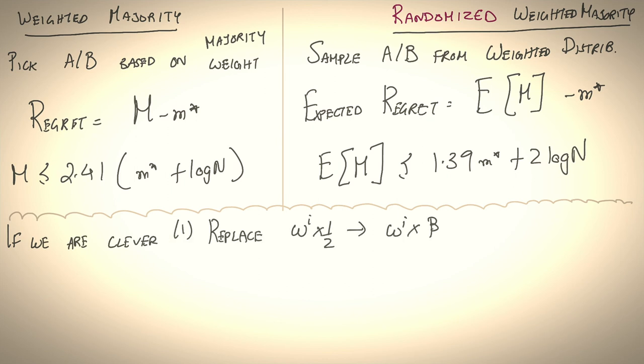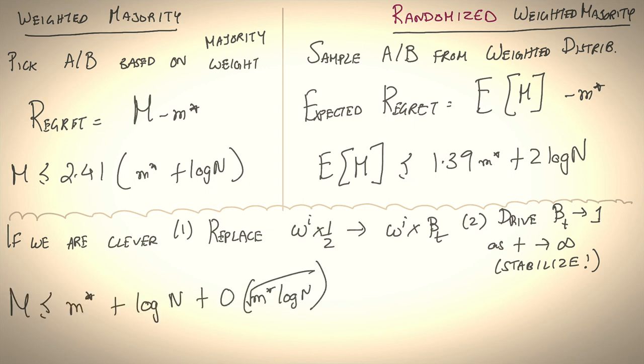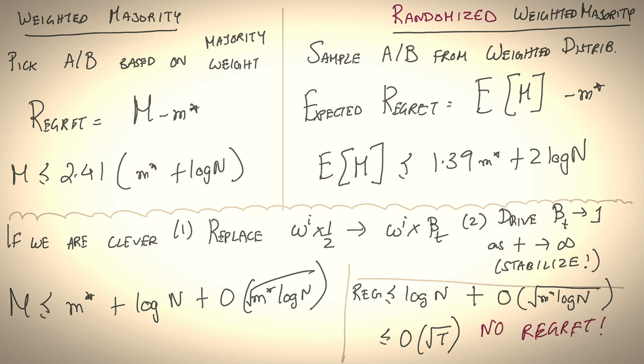Now, if you do two more things. First, we replace halving the weight by a constant beta, and we choose beta in a way such that it goes to 1. So over time, you stabilize your choices. You can then show that the expected number of mistakes is upper bounded by m star plus log of n plus O(√(m* log n)). And if you compute regret, which is simply m minus m star, you get sum of these two terms, all of which are sublinear in time. So O(√t), which means this is a no regret algorithm. So just by randomization and carefully decaying weights, we have managed to come up with an algorithm that in expectation does as well as the best expert in hindsight. And in the next lecture, we will talk about an algorithm hedge that does even better.